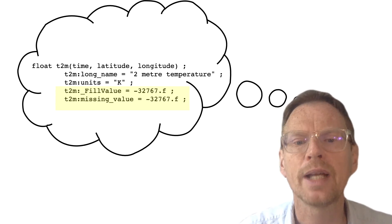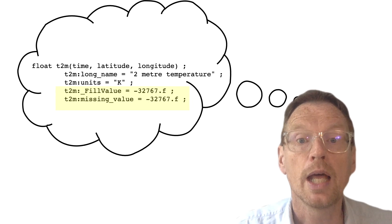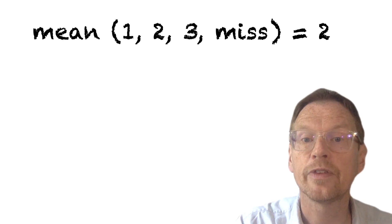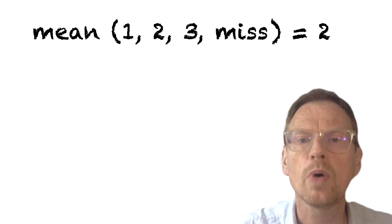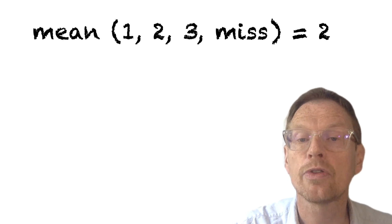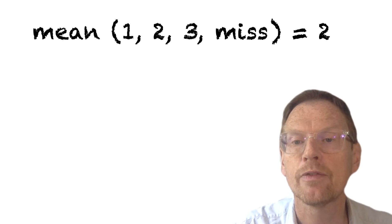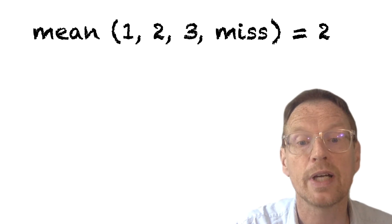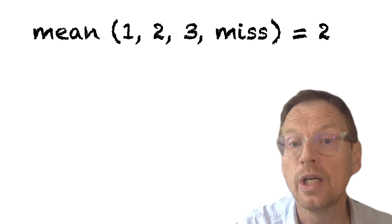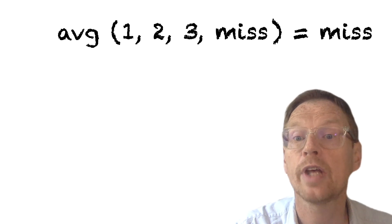Let's give an example. Imagine we have a list of four numbers: one, two, three, and the fourth entry is missing. If we want to calculate the mean, the mean of these four entries is simply two, because the missing values are ignored. It takes one, two, and three, divides by just three present numbers, and comes up with two. With the average function, it doesn't ignore the missing values, so the average of one, two, three, and missing is actually missing.